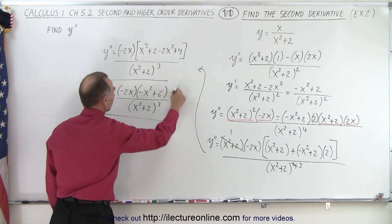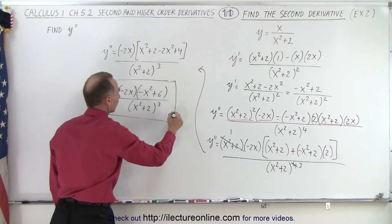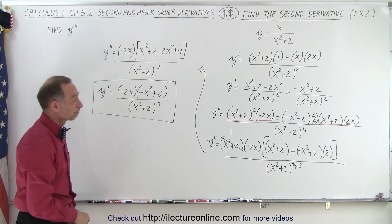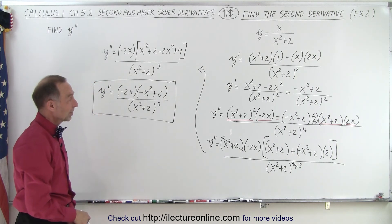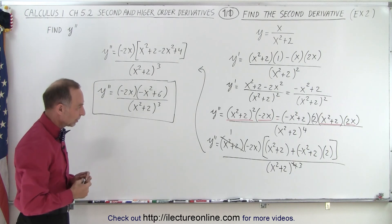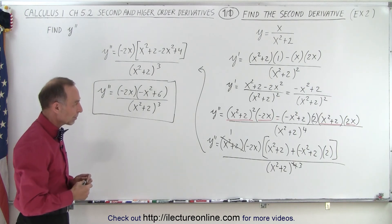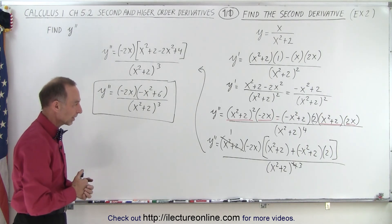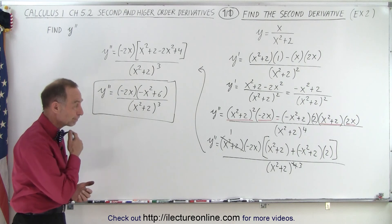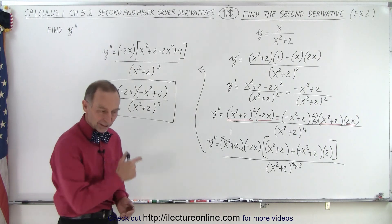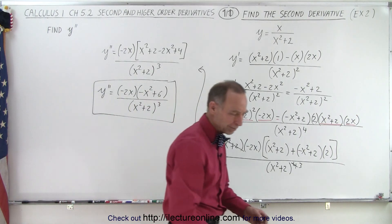That should be the second derivative of our original function. You can see it gets messy very quickly, so be very careful about making algebraic mistakes, because that's easy to do when you have a big mess like this. And that is how it's done.